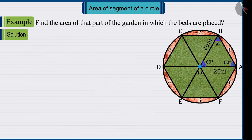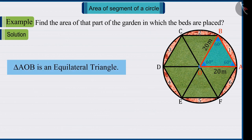So, we can say that triangle AOB is an equilateral triangle with all sides equal.